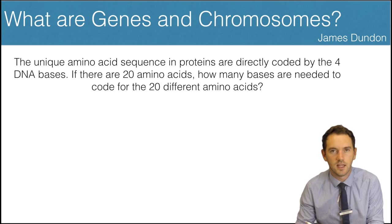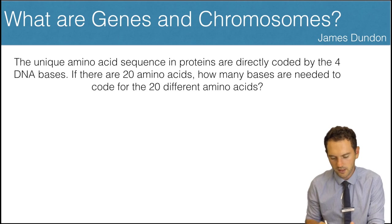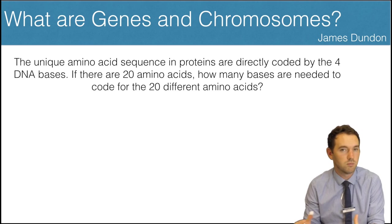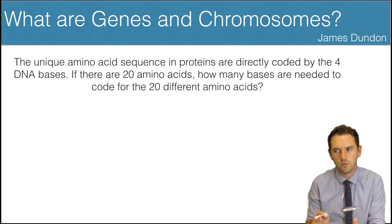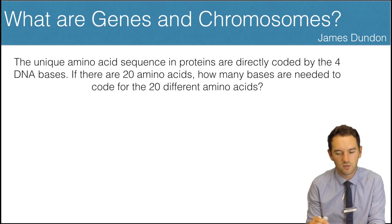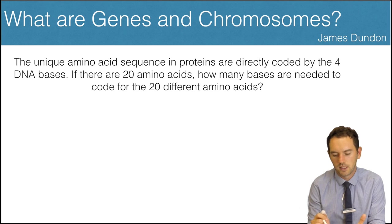So I've got one question at the end here to start having you think about something a little bit different. These genes code for proteins, and proteins are just a sequence of amino acids. So if the DNA codes for the amino acid sequence, we can't just have adenine code for one of the amino acids because we've got 20. So how many of those bases put together do we need to code for one amino acid? And it's mathematical if that helps.